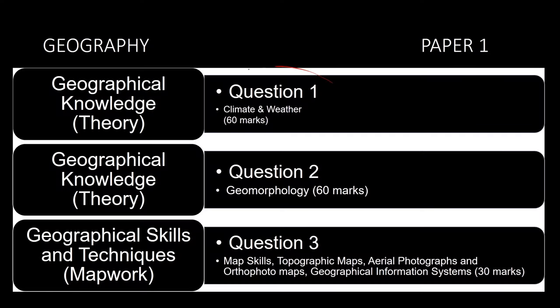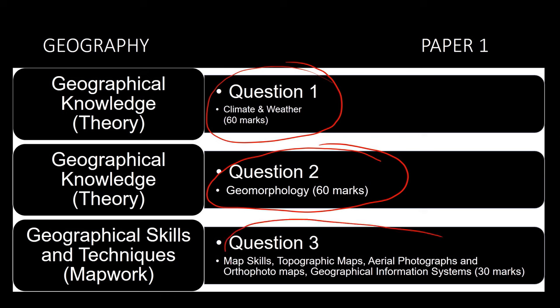Let's take a closer look at the format and structure of Geography Paper 1. Question 1 is climate and weather, accounting for 60 marks. Question 2, geomorphology, 60 marks again. And question 3, geographical skills and techniques, made up of map skills, topographic maps, aerial photographs and orthophotomaps, as well as geographical information systems, for a total of 30 marks. Geography Paper 1 is 150 marks, and the time allocation is 3 hours.